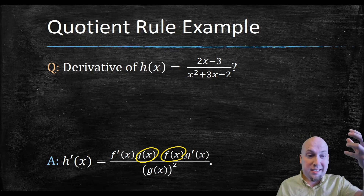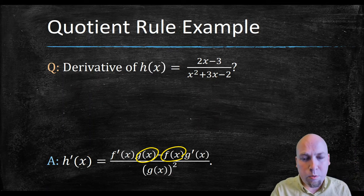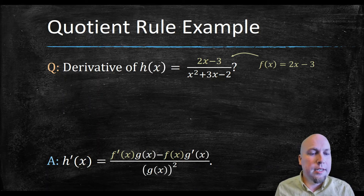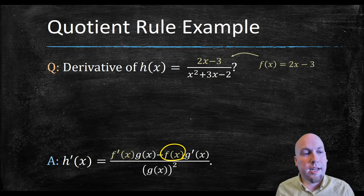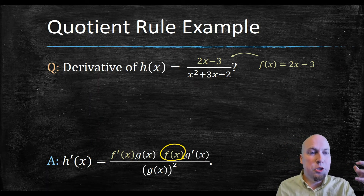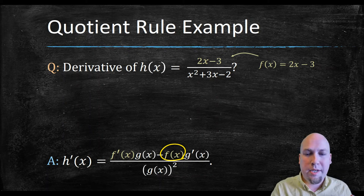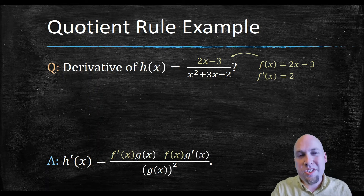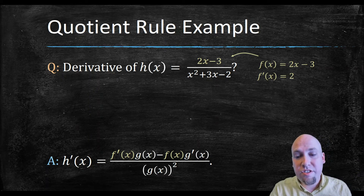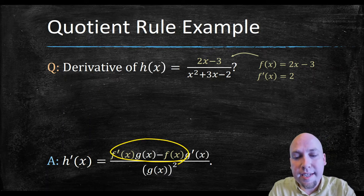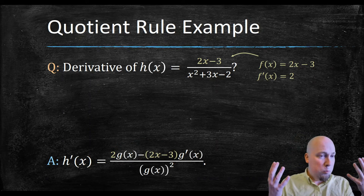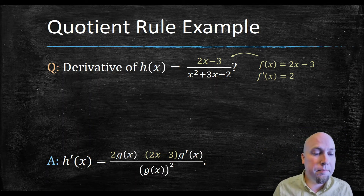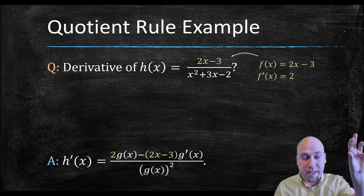So my first job is to identify what is the top and what is the bottom. They're just sitting right there. The top is 2x minus 3, so that's what my f(x) is going to be — that goes in that slot. But I also need f prime — the derivative of the top. Derivative of 2x minus 3: using the power rule, derivative of 2x becomes 2, derivative of minus 3 becomes 0, so the derivative of f is just 2. Now I just plug those into the two slots in the formula.